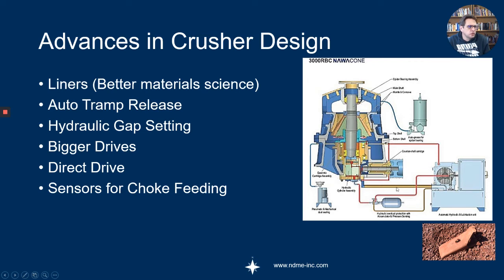There's the auto tramp release, which has to do with the hydraulic system. We've got an accumulator here—basically just a bladder that's filled with nitrogen. If the rock enters the chamber and it can't break it, this bladder gives a bit of give and allows the rock to fall through without breaking the liners or destroying them.